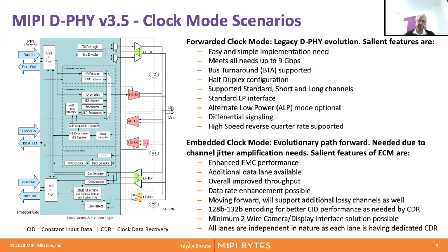D-PHY supports standard short and long channels and supports the legacy low-power interface. There is an optional ALP mode also available. It is a standard differential signaling physical layer and supports high-speed reverse mode at the quarter rate of the forwarded mode. These are the salient features of the forwarded clock mode.